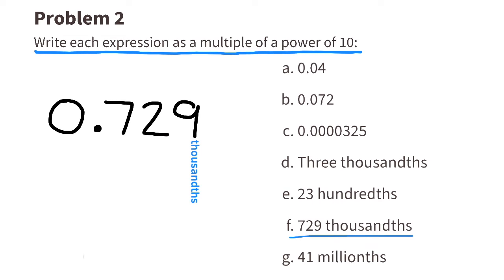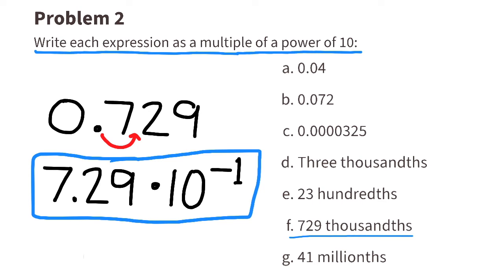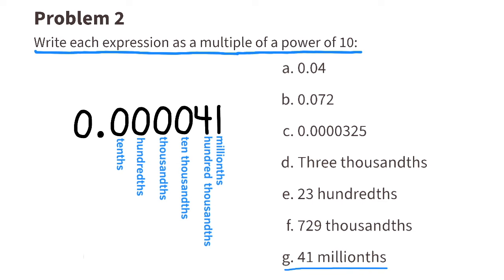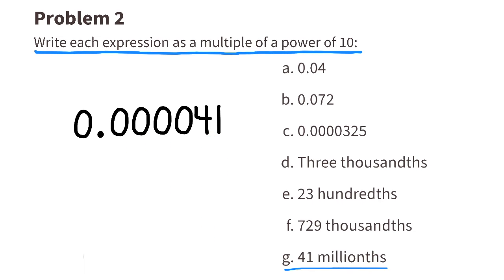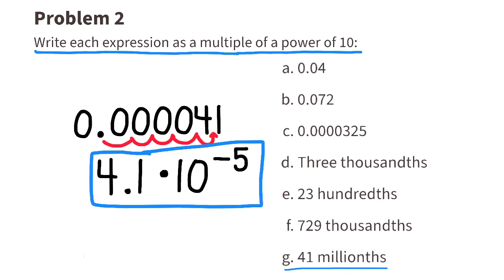We can rewrite the expression seven-hundred-twenty-nine-thousandths as a multiple of a power of ten by writing 7.29 times ten to a negative power, because it's representing a decimal. The exponent is a negative one, because the decimal is only one place to the left of the seven. We can write forty-one-millionths as 4.1 times ten to a negative power, and since the decimal is five place values to the left of the four, the exponent is a negative five.